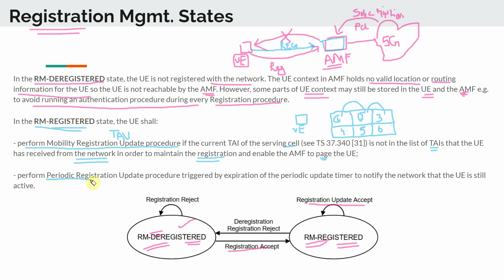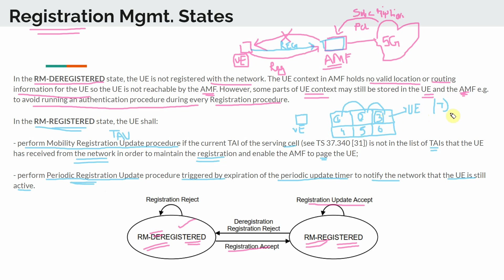The UE shall also perform a periodic registration update triggered by the expiration of a periodic update timer, to notify that the UE is still active. So say if the UE is in tracking area three, there is a timer T after which it has to re-initiate the periodic registration. This tells the AMF that even though I'm in the same tracking area as before, I'm telling the network: I'm still here. If you have incoming data for me, this is my tracking area and serving cell — that's how you reach me.